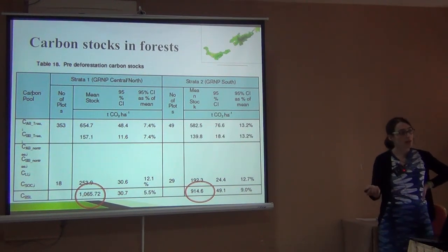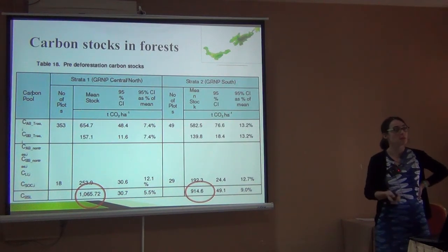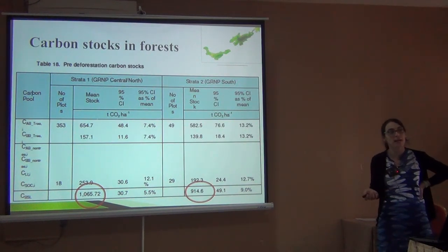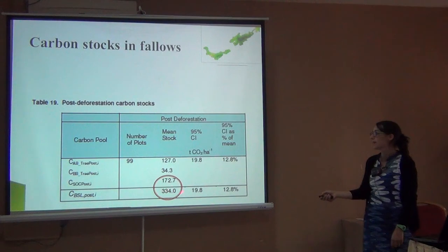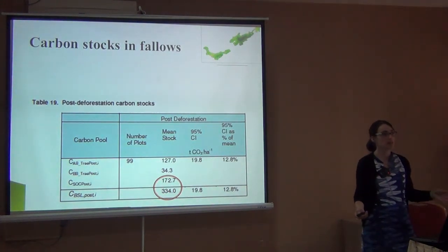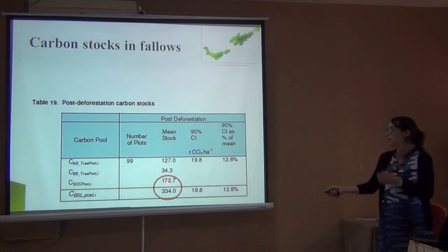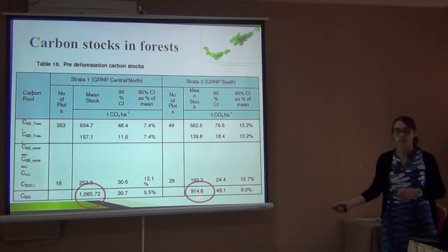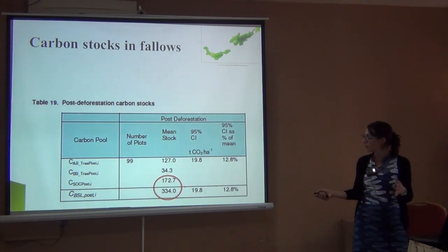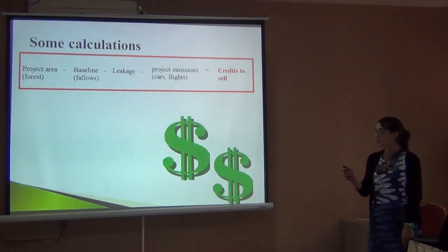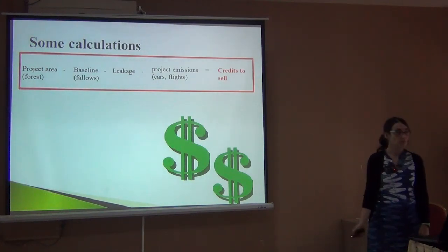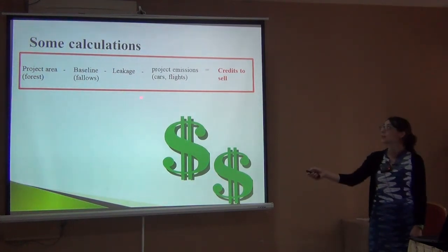But you know, these people will not clear the land to zero — they'll do slash-and-burn agriculture. Some trees will remain, they'll let it fallow and come back later, so it doesn't become zero. We had to estimate how much carbon was in these fallows, and we estimated about 300. So if we have 900 and, without doing anything, there would be 300, there's still 600 we can sell. But remember — it's not just about how much we have versus the baseline. We also need to account for leakage and how much the project itself costs.